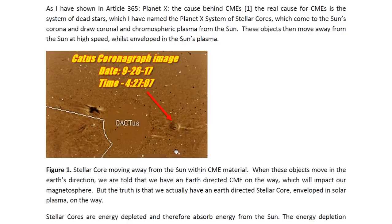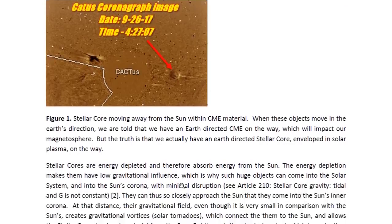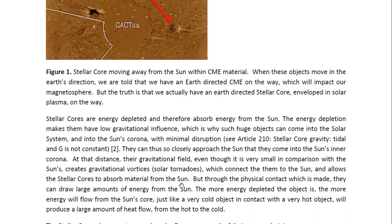When these objects move in the Earth's direction, we are told that we have an Earth-directed CME on the way, which will impact our magnetosphere. But the truth is that we actually have an Earth-directed stellar core enveloped in solar plasma on the way. Stellar cores are energy depleted and therefore absorb energy from the sun. The energy depletion makes them have low gravitational influence, which is why such huge objects can come into the solar system and into the sun's corona with minimal disruption.